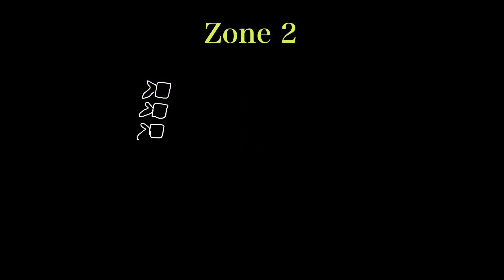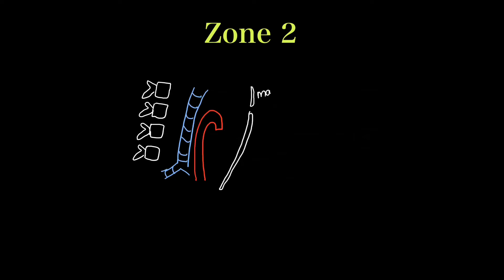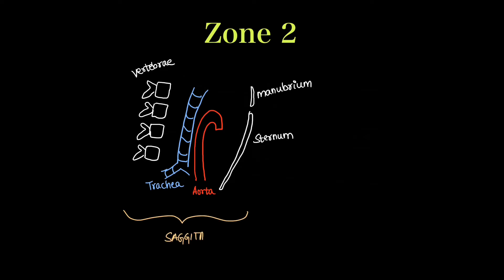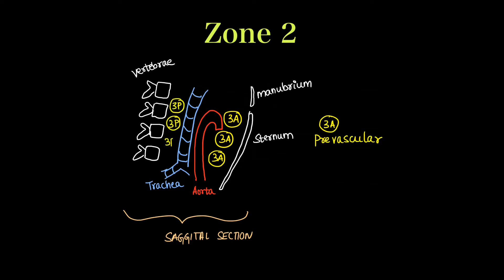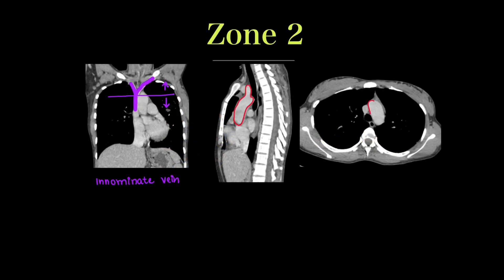Zone 3, station 3, is different because it is divided into anterior and posterior rather than right and left. The landmarks are the vertebrae, trachea, aorta, and sternum. On a sagittal section, whatever comes in front of the arch of aorta is the prevascular group — 3A. Behind the trachea is retrotracheal, or 3P. This is confirmed on sagittal and axial CT images showing the arch of aorta and trachea. Do not confuse station 3 (which falls under zone 2) with zone 3.